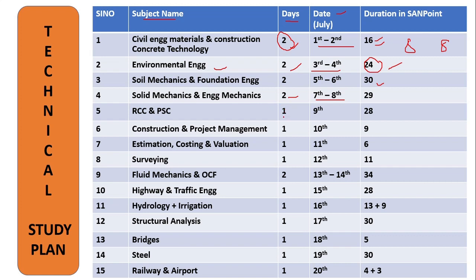The next important subject is RCC and Pre-stressed Concrete. I have given only one day, which I know is very difficult. At this point you have to go through the entire code book IS 456, remember certain standard values, specifications, and formulas, because last year's question papers had questions on identifying formulas. Just go through design principles of beams, columns, and slabs, and technical terms mentioned in the code book. You can increase the speed and watch, and also skip some topics based on the previous question paper.